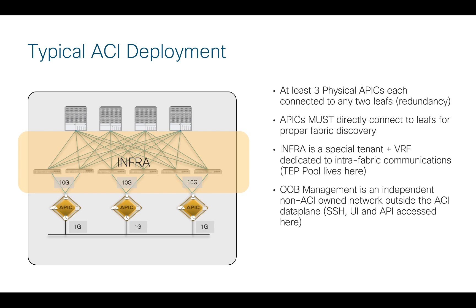Those ports live in a special area that we call infra. Infra is more than just a special area — it is a dedicated special tenant within ACI that has its own VRF, and this is an area where we allow for all of the intrafabric communications. This is where your TEP pool lives, for example. On the other side of APIC, we have the out-of-band management ports, and those are the 1-gig ports on the back of the APIC. The out-of-band management ports are an independent network that is not owned or controlled by ACI and is completely outside of the ACI data plane. For example, this is where you would SSH into APIC for configuration or troubleshooting, access the UI, or engage with APIC's API. So just keep in mind that we really have two parallel networks going on here.